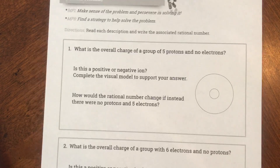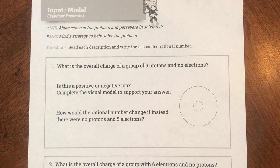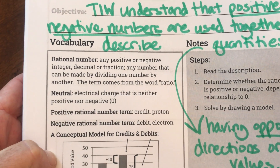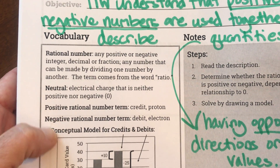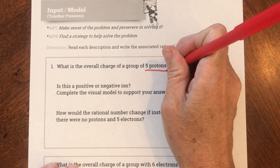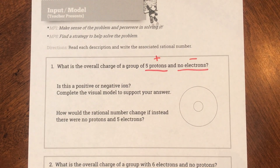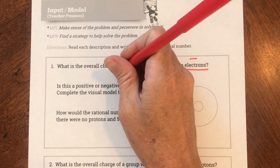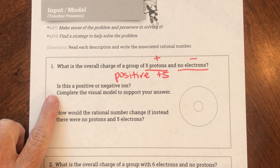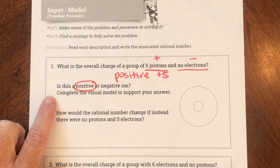Now we're going to look at positive and negatives in regards to atoms. A proton is positive and an electron is negative. What is the overall charge of a group with five protons and no electrons? If it has five positives and no negatives, it's going to be positive five. Is this a positive or negative ion? It's a positive ion.